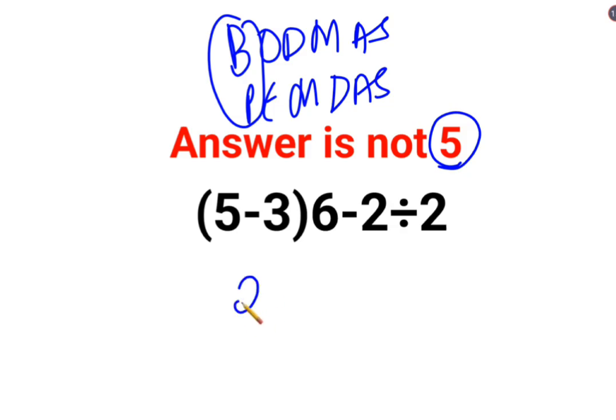So we have 5 minus 3 which is 2, and then there is no sign between this bracket and the 6. So it is basically multiplied by 6 minus 2 divided by 2. At this point, 2 multiplied by 6 is 12 minus 2 divided by 2.